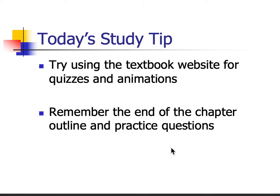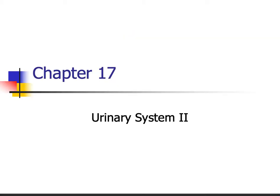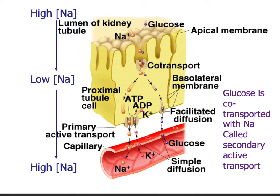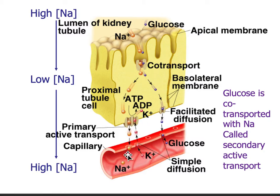Urinary system part two. Recall you have a high concentration of sodium in the filtrate, so you're in the lumen of the kidney tubule. You're going to have passive diffusion of sodium into the cytoplasm, and then you're going to need ATP to actively pump with your sodium-potassium pump through into the capillary. This is where it starts to get a little heavy with the terminology.